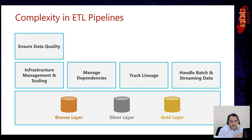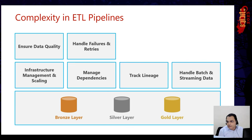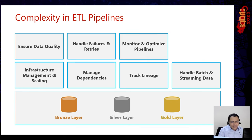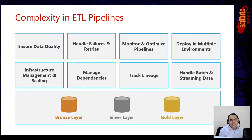Number four: we must ensure data quality — whatever data we're storing in any layer has gone through a proper data quality check. Number five: there can be failures and retries. If you're retrying, you must ensure there's no data duplication. You also have to monitor pipelines, make sure they're optimized and completed within SLAs. Finally, you have to deploy pipelines across multiple environments — from development to pre-production to production. All of these are big challenges with ETL pipelines.